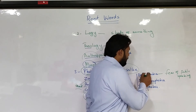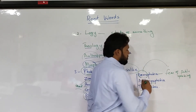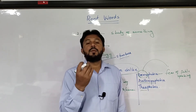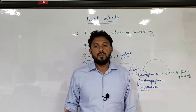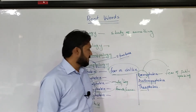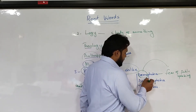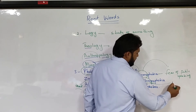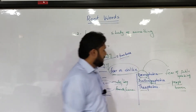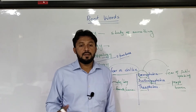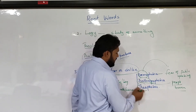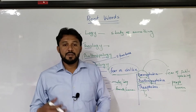'Demophobia' — 'demo' means people or human beings, so demophobia means fear of public speaking. There are many people who feel fear talking before an audience. 'Anthropophobia' — 'anthro' means people or human beings, so anthropophobia means dislike of human beings. 'Theophobia' — 'theo' means religion, so theophobia means fear of religion.